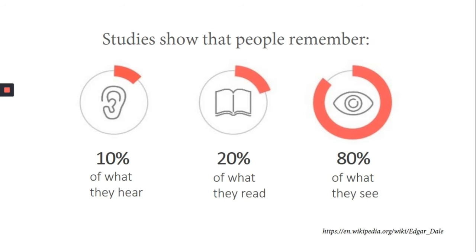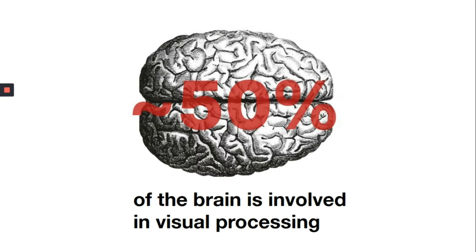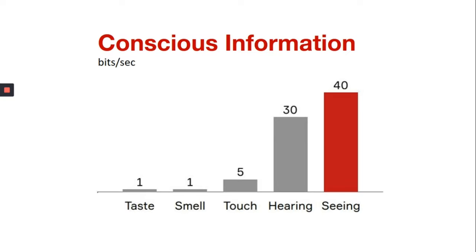To back this data, 30% of the brain is involved only in visual processing and an additional 20-30% of the brain is involved in visual processing of other things. There is a branch of science called cognitive neurophysiology where people have attempted to measure how much information passes through various senses. Taste and smell are the slowest senses and hearing and seeing are the fastest, with seeing being slightly faster than hearing.